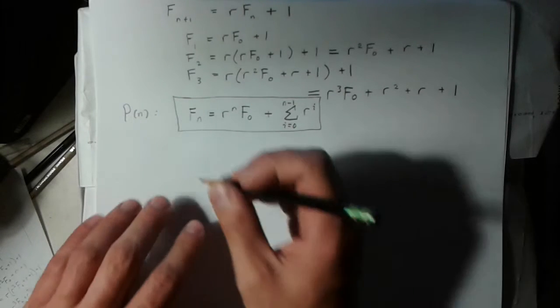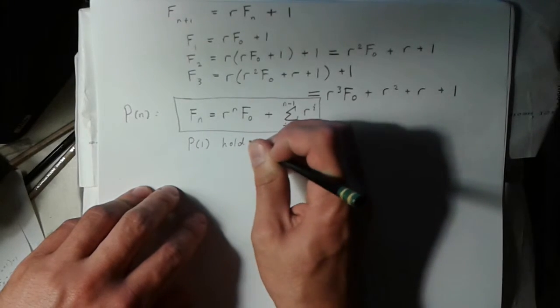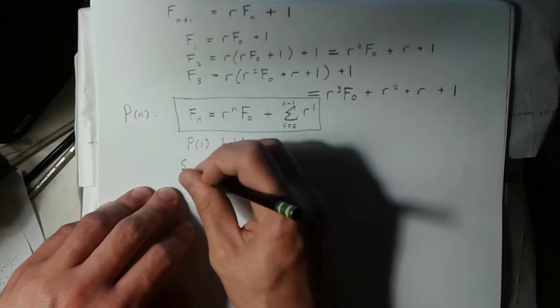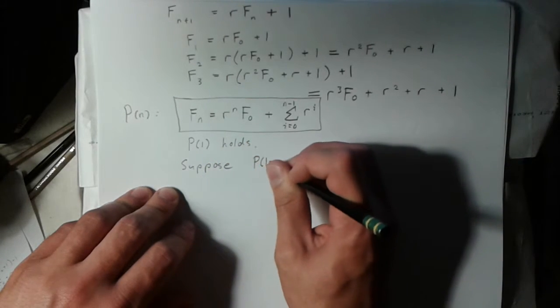This is just r to the 0, which is the 1 there that I have. So I know that p of 1 holds, and now all I have to do is suppose that p of k is true.